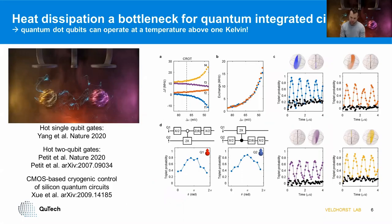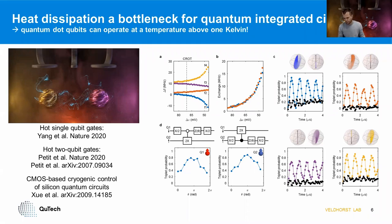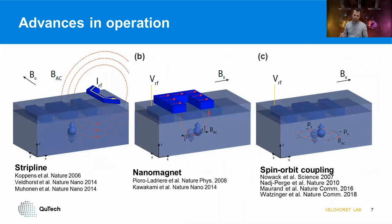Focusing on scaling up, quantum dots have an exciting opportunity: the ability to operate above one kelvin. In the past year, single-qubit and two-qubit gates have been demonstrated above one kelvin, and simultaneously CMOS cryogenic control — for example microwave control — has been demonstrated to operate at these temperatures. We're slowly starting to see a drift from having all electronics at room temperature with qubits at millikelvin, to a regime where both may be integrated together.